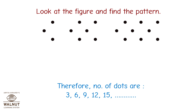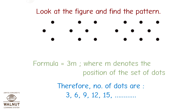Therefore, the number of dots are 3, 6, 9, 12, 15 and so on. The formula is equal to 3M, where M denotes the position of the set of dots.